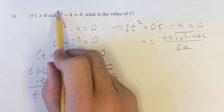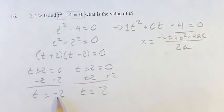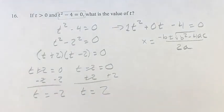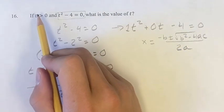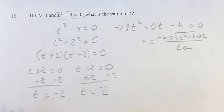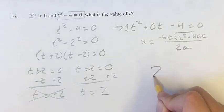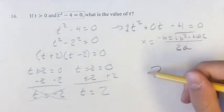So, the solutions to this equation on its own are t equals negative 2 and t equals 2. However, we're told that t is greater than 0, which means that t is not equal to negative 2. So, our only solution, which is good because you can only enter one solution on the SAT, is that the value of t is 2.